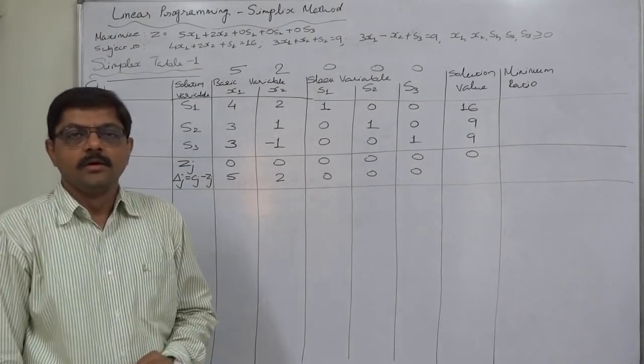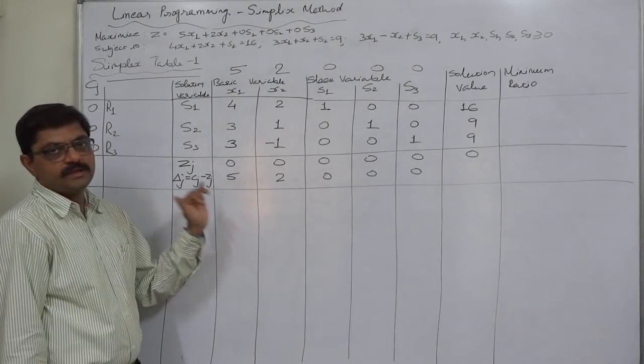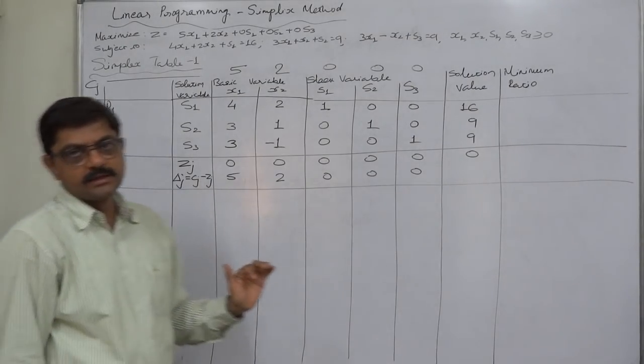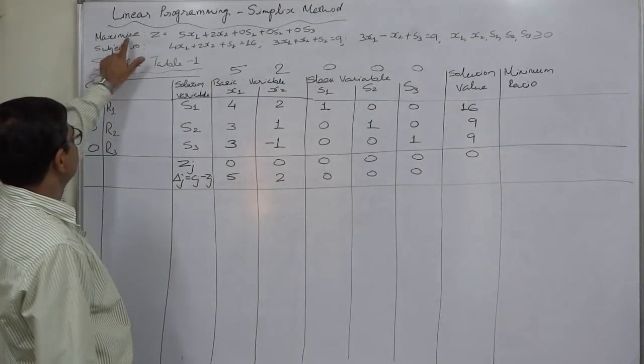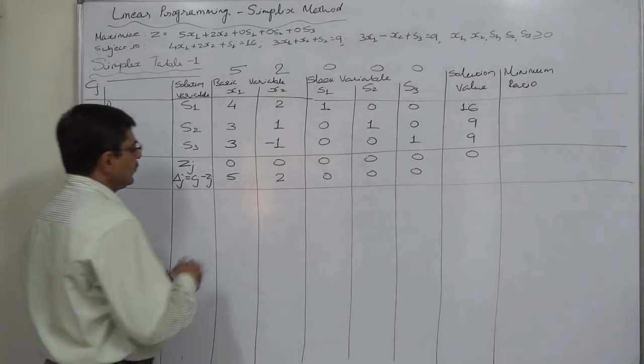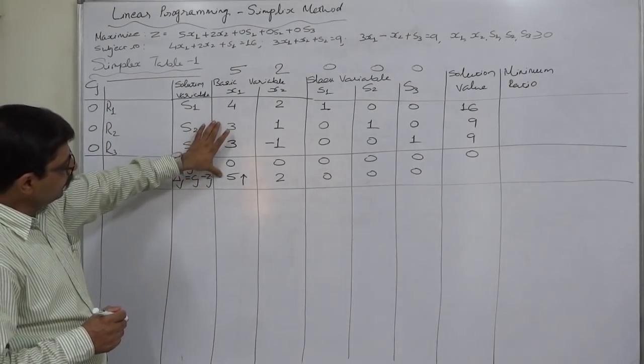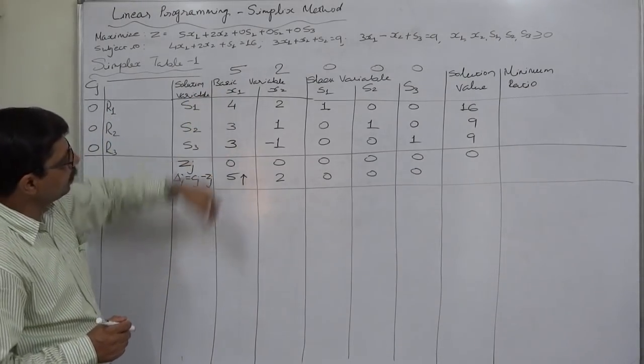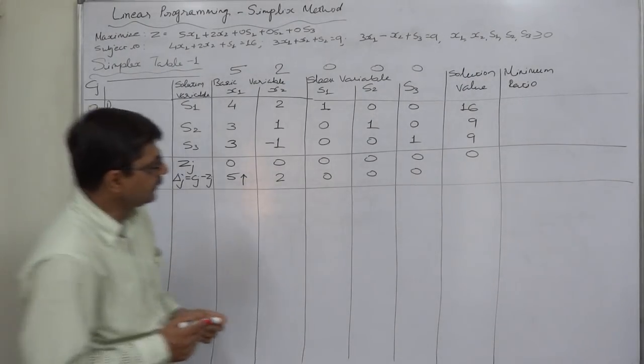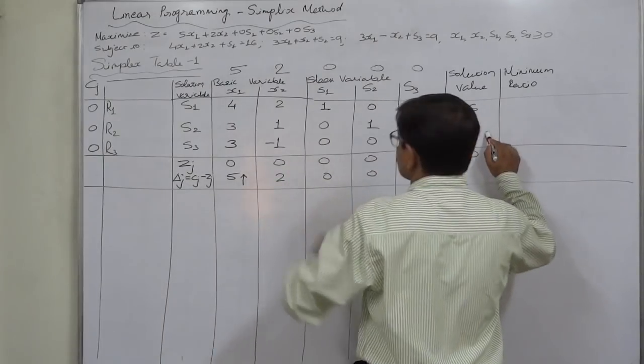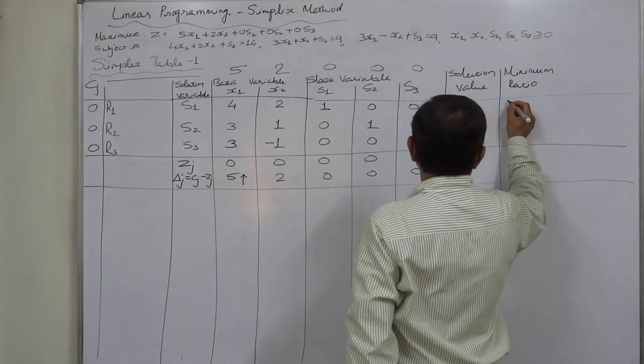So this is not the optimal solution and in case of a maximization problem if the simplex table does not show the optimal solution we have to select highest delta J, that is 5. So we have selected it and by this moment we have actually selected column X1, which has become now key column.